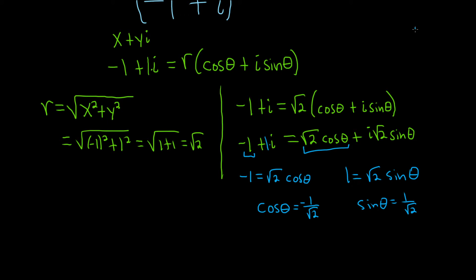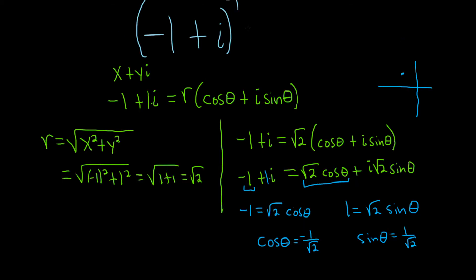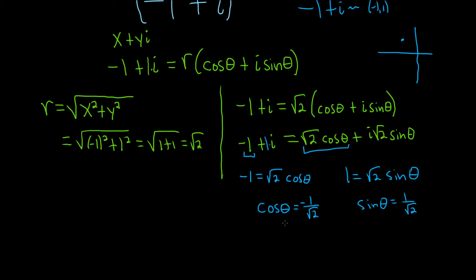So where on the unit circle does this occur? The complex number negative one plus i is the same as the ordered pair negative one, one. On the unit circle, cosine is the x-coordinate and sine is the y-coordinate. Since cosine is negative and sine is positive, we must be in quadrant two. The sine of pi over four equals one over the square root of two, so we're looking for an angle with a reference angle of pi over four in quadrant two. Since pi equals four pi over four, subtracting pi over four gives us three pi over four.